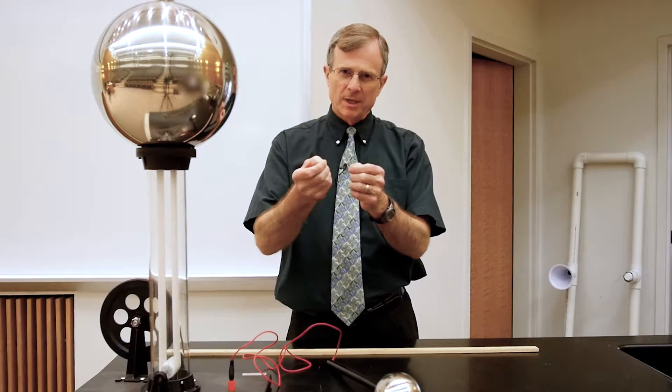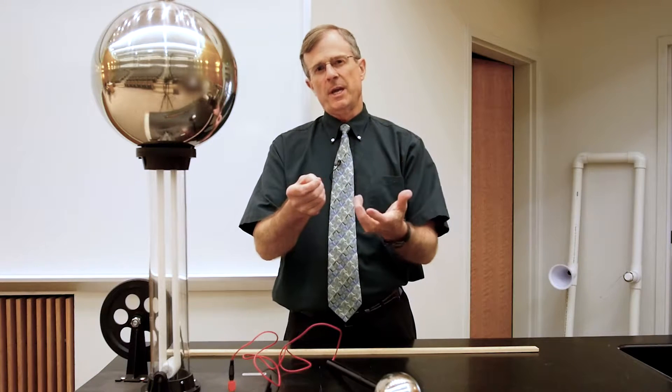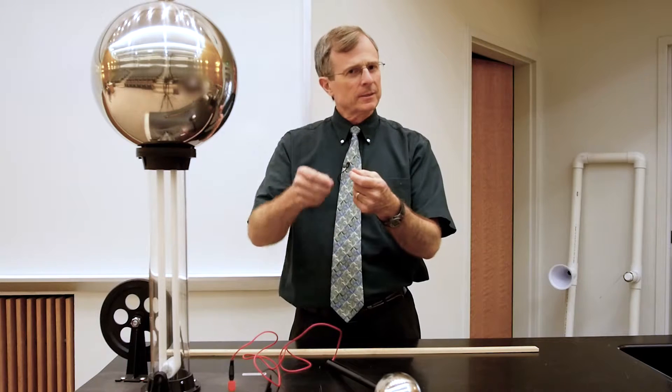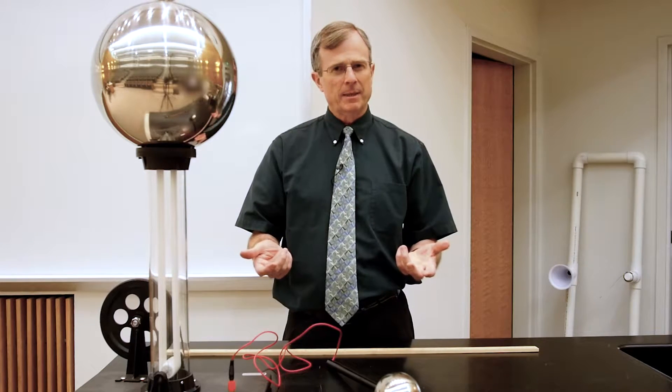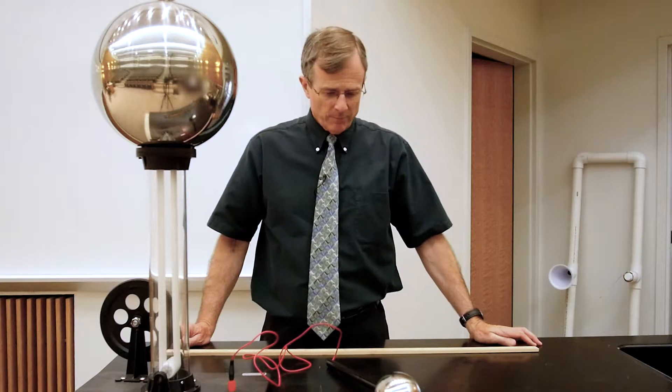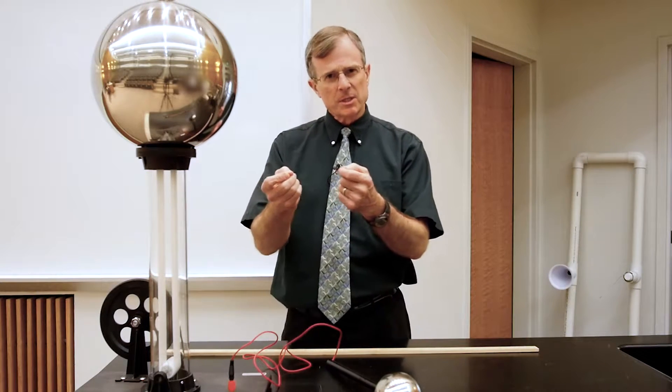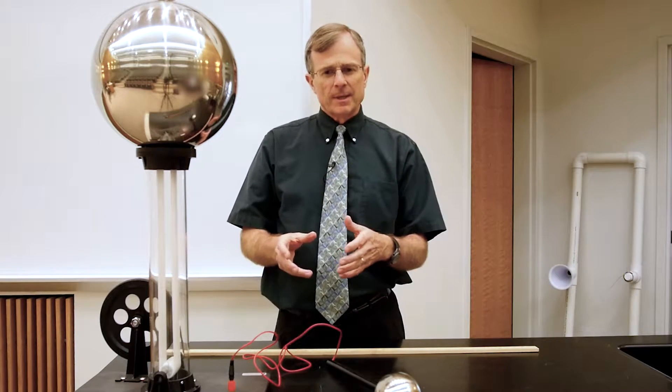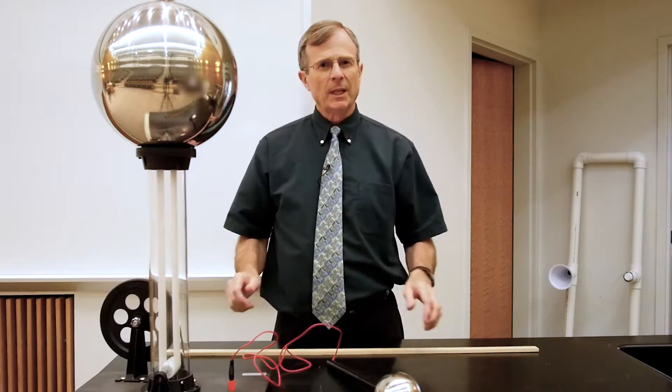And when you strip an electron off of an oxygen or a nitrogen atom, then that electron can conduct electricity just like a metal can. And that's how lightning is formed, by the stripping of electrons off of the atoms and then the electrons conduct the electricity between the clouds and the earth.